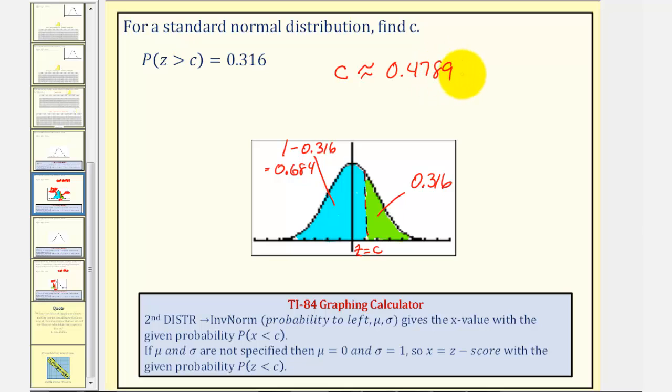So the probability that a given data value would have a Z-score greater than 0.4789 is approximately 0.316, or 31.6%. I hope you found this helpful.